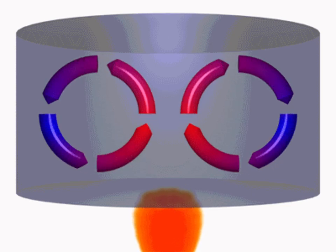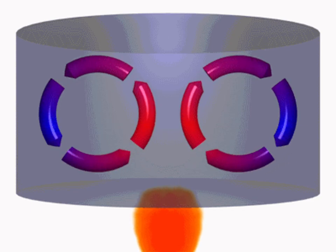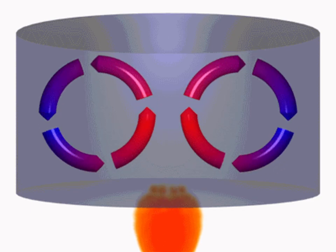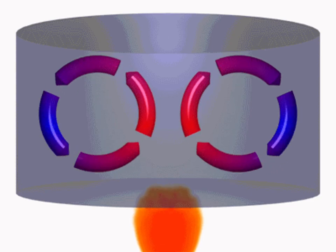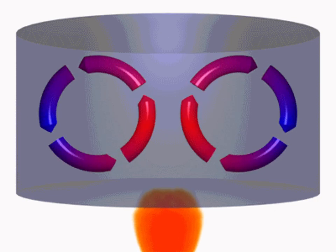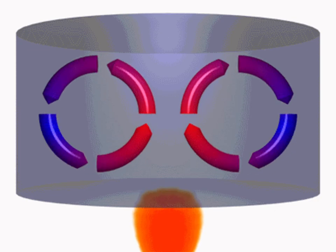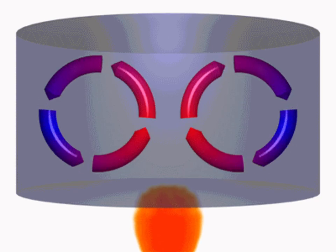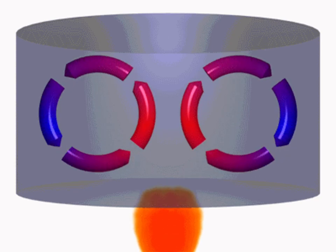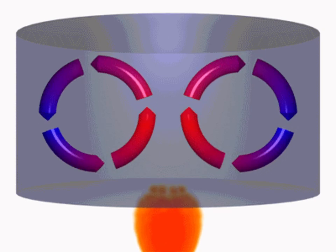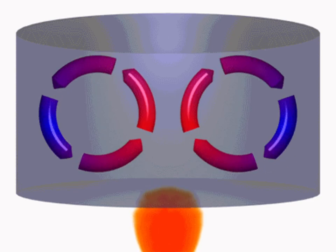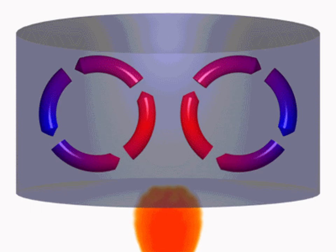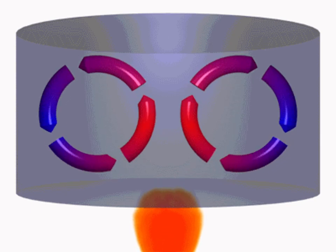When thermal energy is applied to one part of a mass of fluid, nearby particles become more energetic and spread apart. The fluid in that area becomes, therefore, less dense. Less dense fluid rises away from the heat source while more dense fluid sinks to take its place. Eventually, the heated fluid cools, becomes denser again, and then sinks. The resulting cycle of moving fluid transports thermal energy.